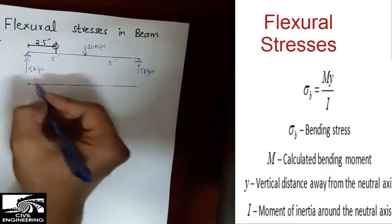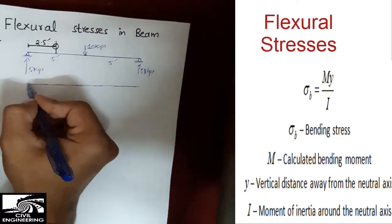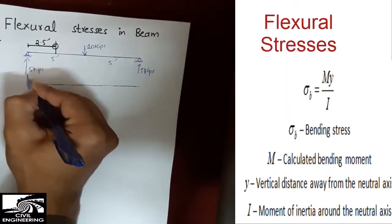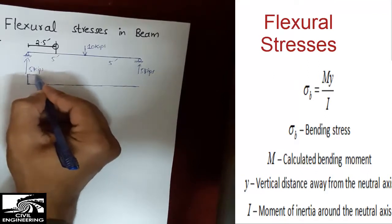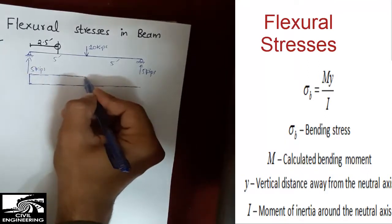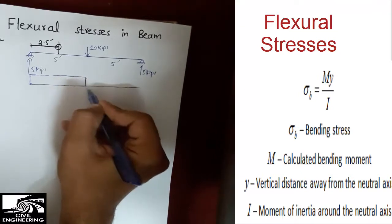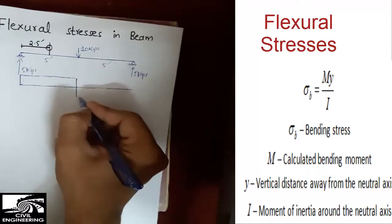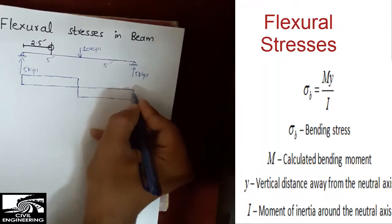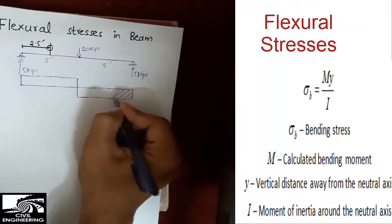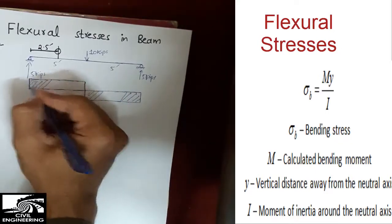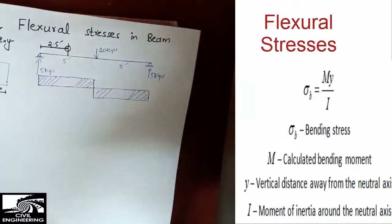The shear force diagram is straightforward: starting from the left, 5 kips acts upward at the left support, remains constant until the center where the 10 kip load acts downward, dropping to negative 5 kips, and then returns to zero at the right support. This is the shear force diagram for this beam.